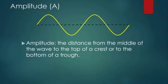Amplitude is basically the height of a wave, but we have to measure it very specifically. It's the distance from the middle of the wave, that dotted line, to the top of a crest or to the bottom of a trough. This means that we can measure the amplitude here or we can measure the amplitude here.